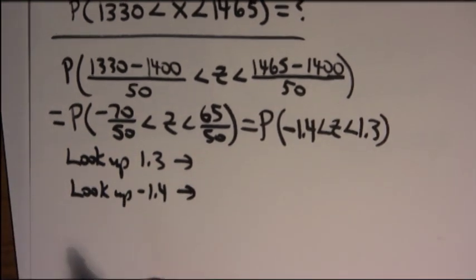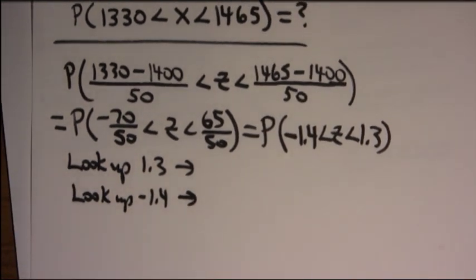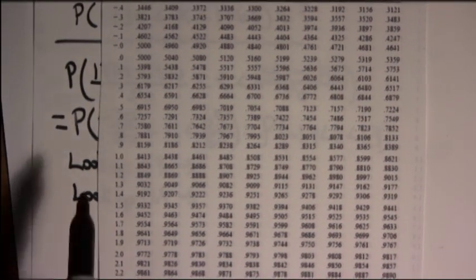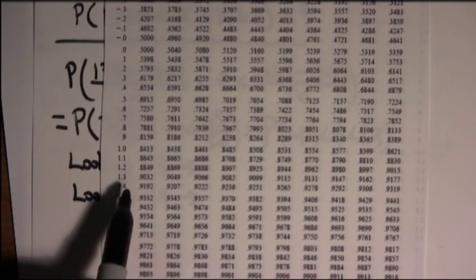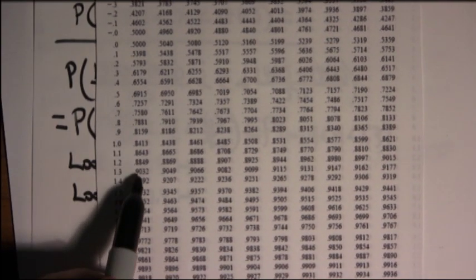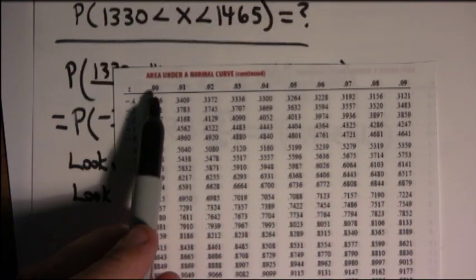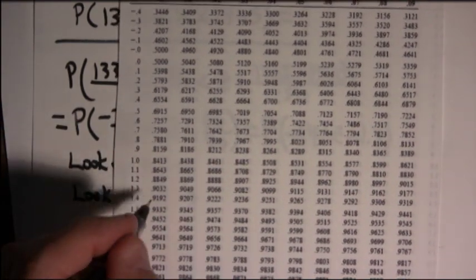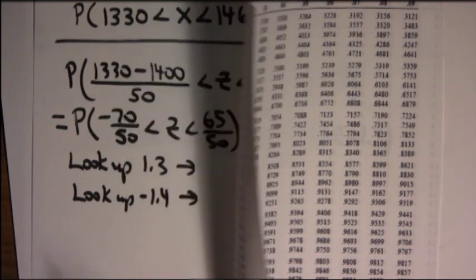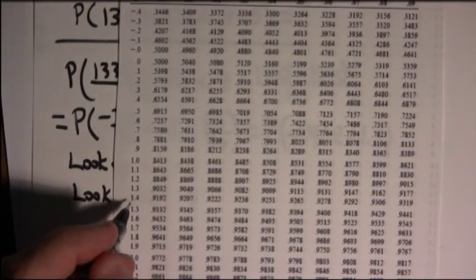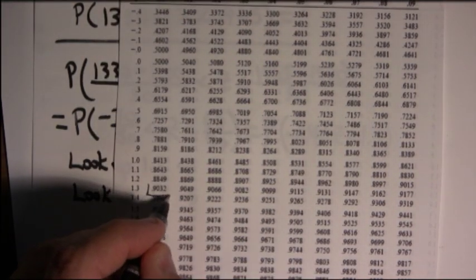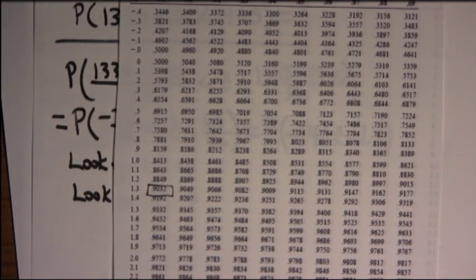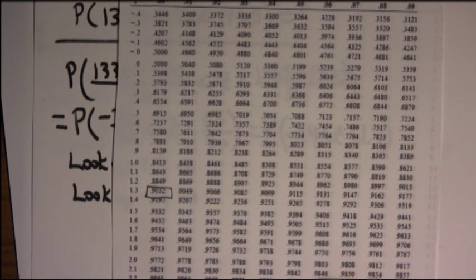So, if I look up 1.3 in the table, I go to the table and I go down to the 1.3. And since it's 1.30, I just go to the column labeled 0. So, I'll go 1.30 and 1.30. That's .9032. So, I copy down .9032.